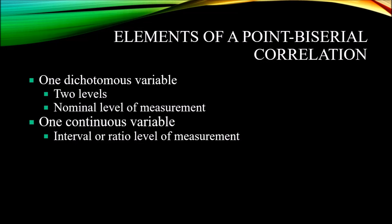Now let's look at the elements of a point-biserial correlation. You need one dichotomous variable. A dichotomous variable has two levels that are mutually exclusive and measured at the nominal level, so these levels cannot be ranked — they are in name only. In the example, that would be completed or not completed. The variable would be completion status, with one level being completed and the other being not completed.